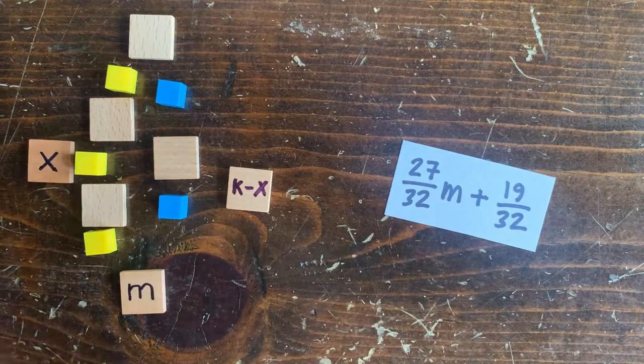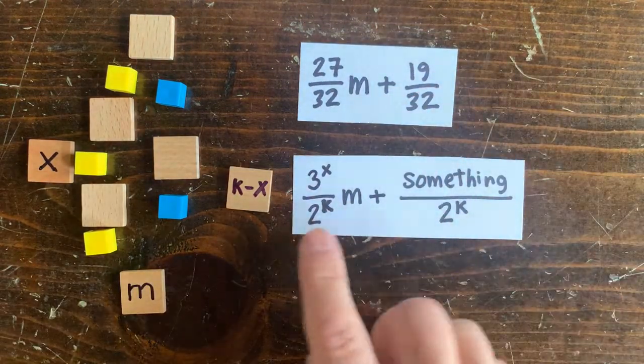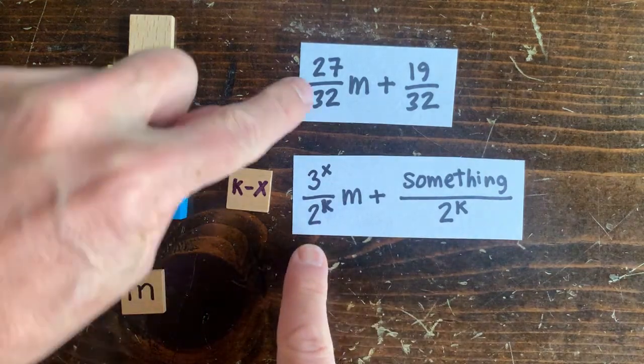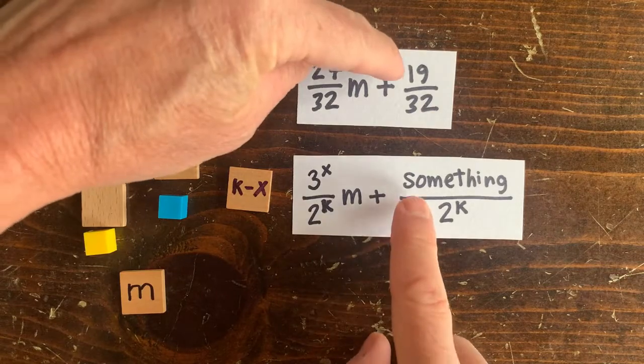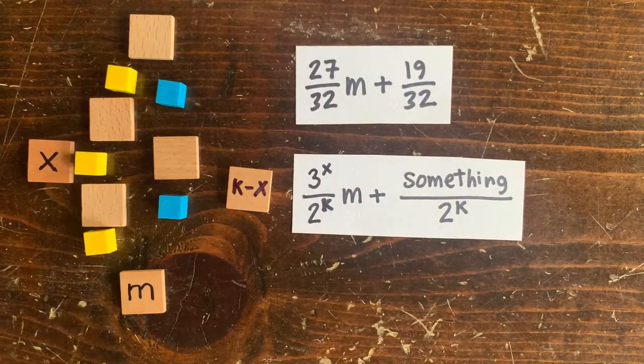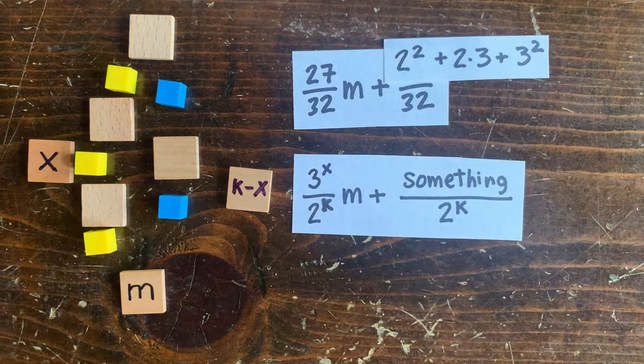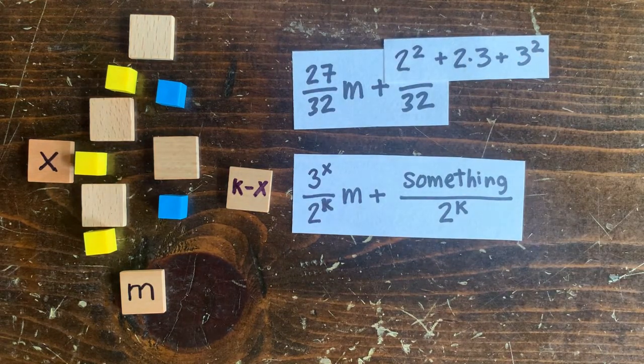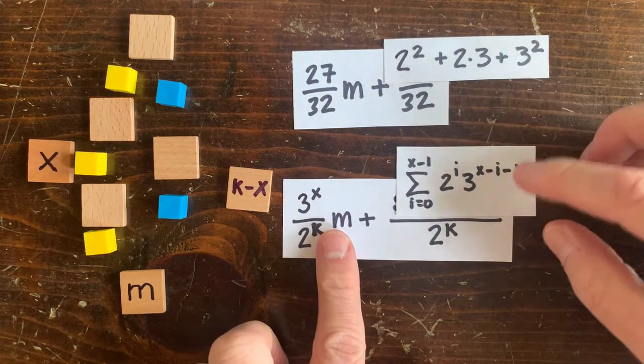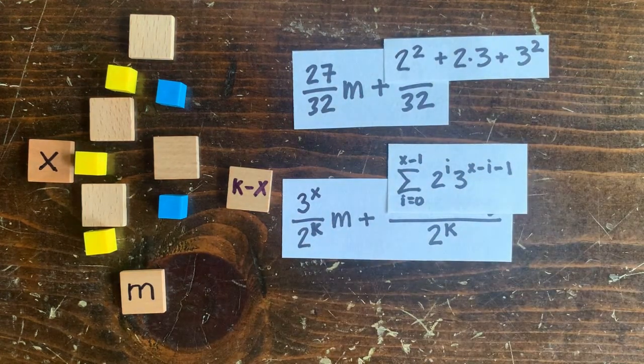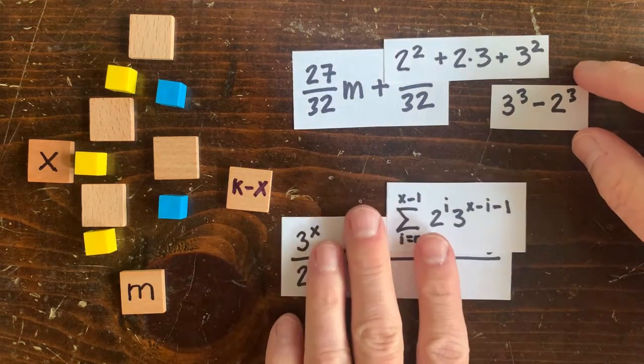How about in general? Then we get m equals a 3 to the x over 2 to the k, m plus something over 2 to the k. In this case, that something is 2 squared plus 2 times 3 plus 3 squared. And in general, it's this kind of nasty sum. But amazingly, this sum further simplifies to 3 to the x minus 2 to the x.